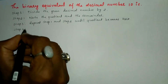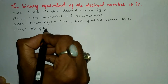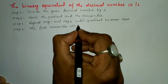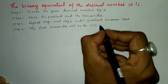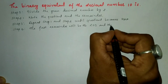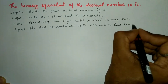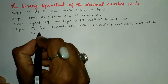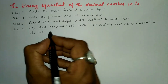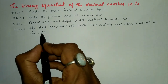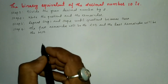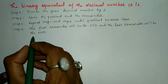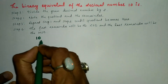Step four: the first remainder will be the least significant digit, and the last remainder will be the most significant digit. We have to write the binary equivalent number from the most significant digit to the least significant digit. Now let us come back to the example.